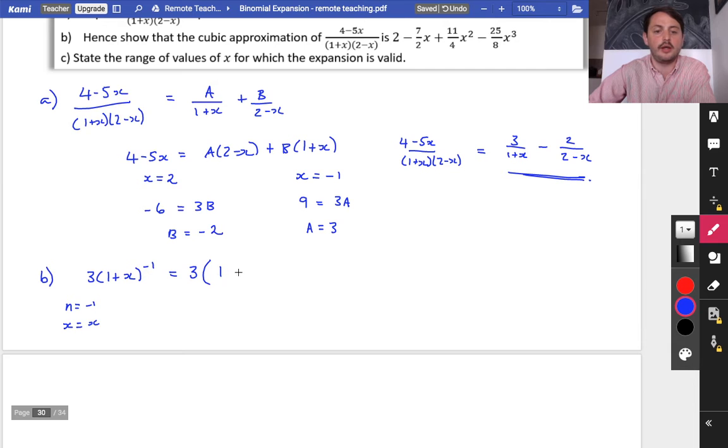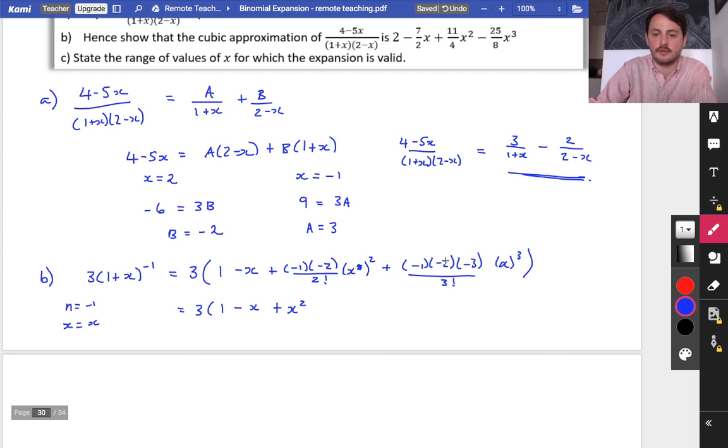So that's going to be 3 multiplied by 1 + nx + n(n - 1) over 2 factorial x² plus n(n - 1)(n - 2) over 3 factorial x³. So that is 3(1 - x). It's positive, they all cancel, plus x². It's negative, they all cancel, minus x³. Multiplying by the 3, and you get 3 - 3x + 3x² minus 3x³. I'm stopping at x³ this time, because I'm just adding these two expressions together afterwards, or subtracting them, depending on how you want to see it.